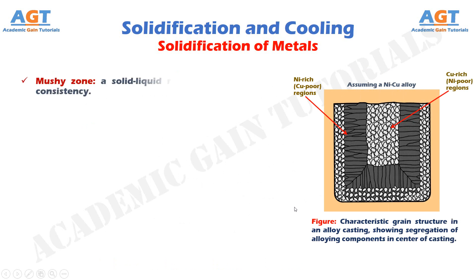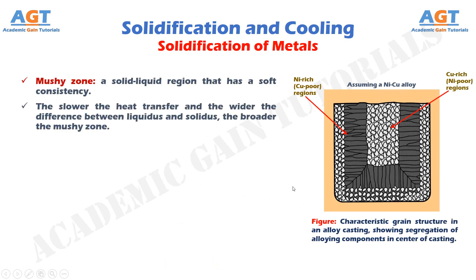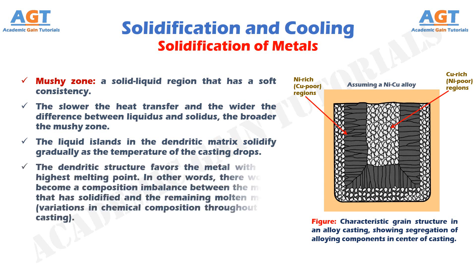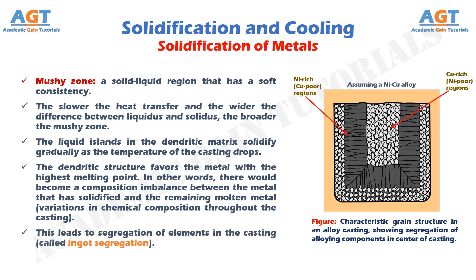The mushy zone is a solid-liquid region that has a soft consistency. The slower the heat transfer and the wider the difference between liquidus and solidus, the broader the mushy zone. The liquid islands in the dendritic matrix solidify gradually as the temperature of the casting drops. The dendritic structure favors the metal with the highest melting point. In other words, there becomes a composition imbalance between the metal that has solidified and the remaining molten metal — variations in chemical composition throughout the casting. This leads to segregation of elements in the casting, called ingot segregation. Assuming a nickel alloy, we obtain a grain structure as shown in this figure, where the comparatively lighter area shows copper-rich and nickel-poor regions, and the comparatively darker area shows nickel-rich and copper-poor regions. This figure shows the characteristic grain structure in an alloy casting, showing segregation of alloying components in the center of the casting.